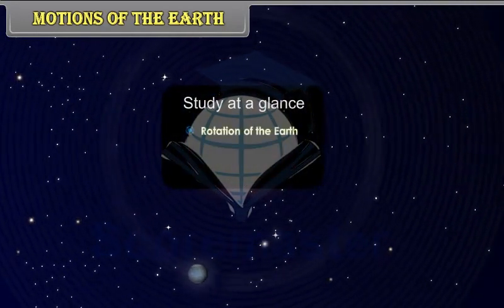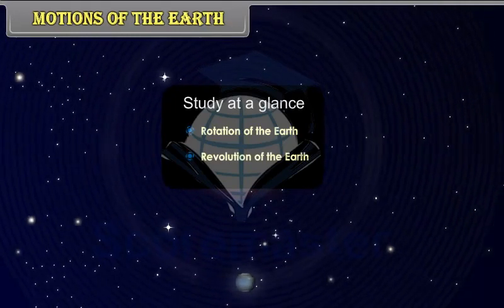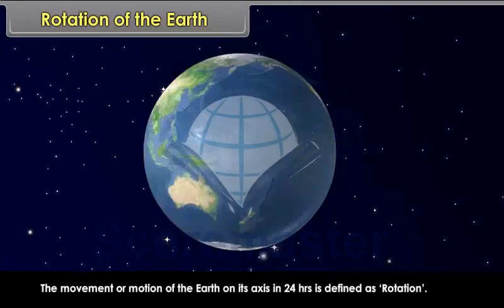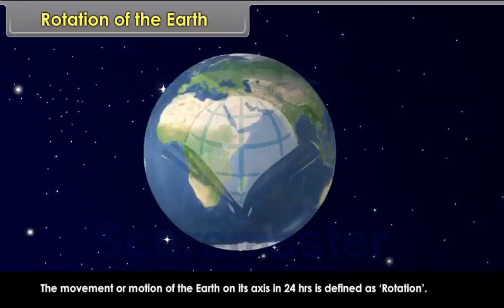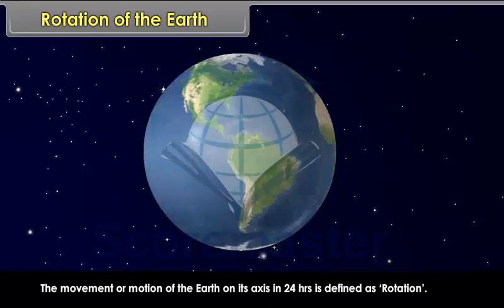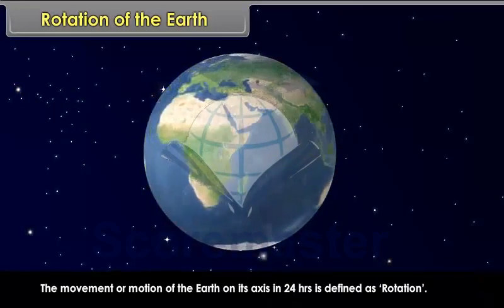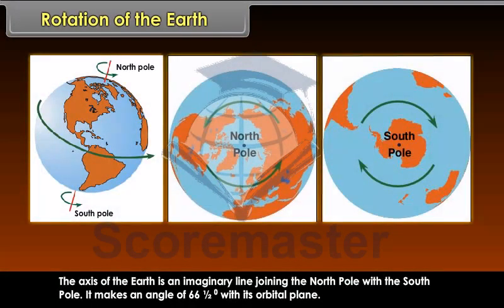Rotation of the Earth. The movement or motion of the earth on its axis in 24 hours is defined as rotation. The axis of the earth is an imaginary line joining the north pole with the south pole. It makes an angle of 66.5 degrees with its orbital plane.